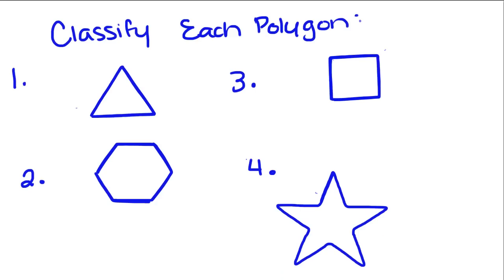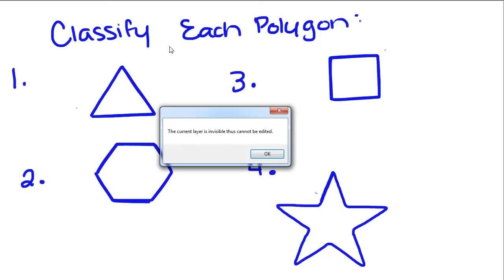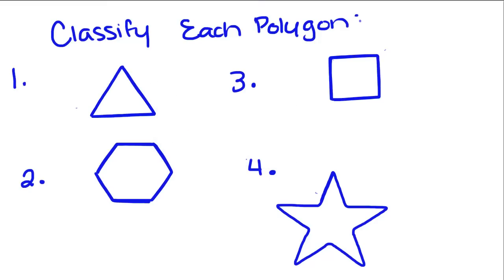Now we're going to do a little practice with classifying each polygon. The first thing we have to do every time is count up the number of sides it has because that's how we name it. Obviously, this has three sides, so it has to be a triangle.